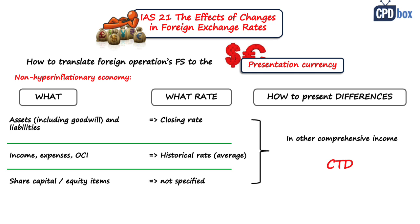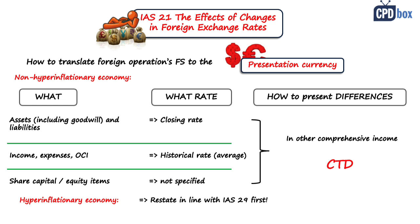Whatever method you use, please be absolutely consistent. One last point: when a hyperinflationary economy currency is involved, you should first restate the financial statements in line with IAS 29 — Financial Reporting in Hyperinflationary Economies — and only then apply the same translation procedures. We are not going to apply that here.